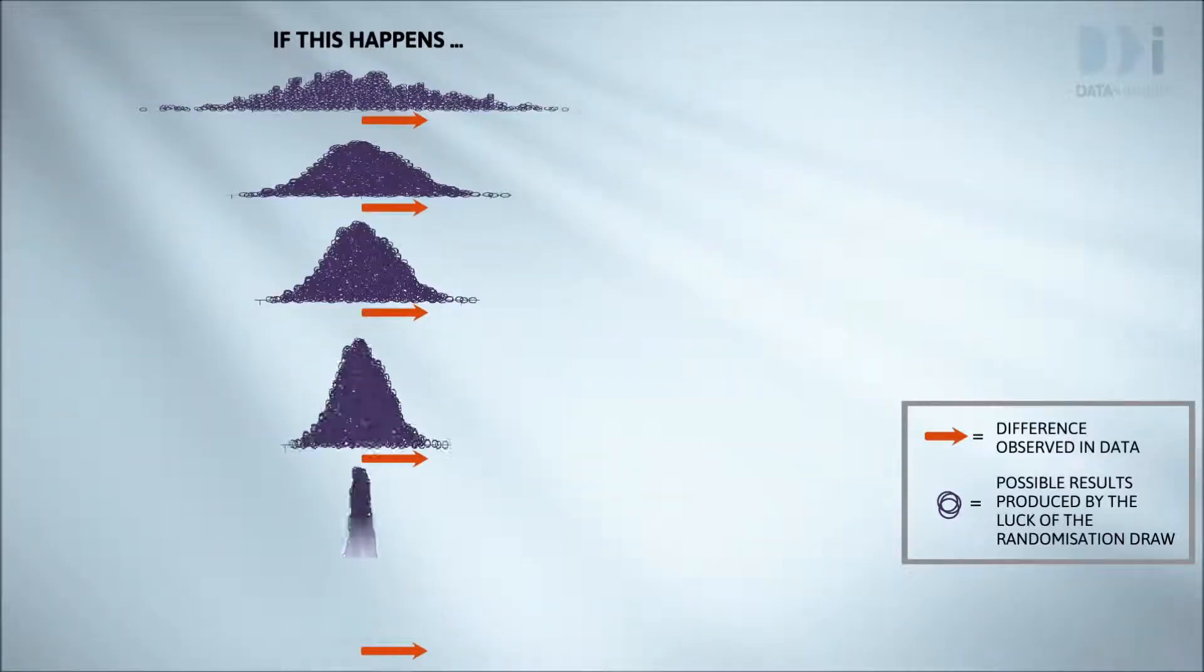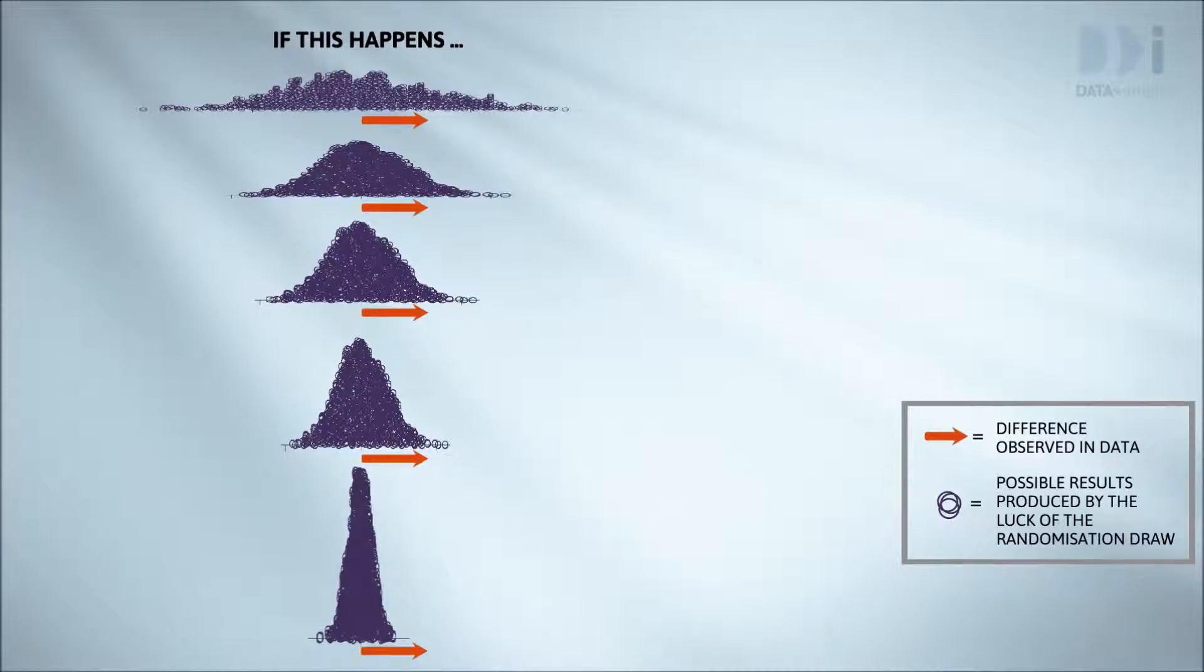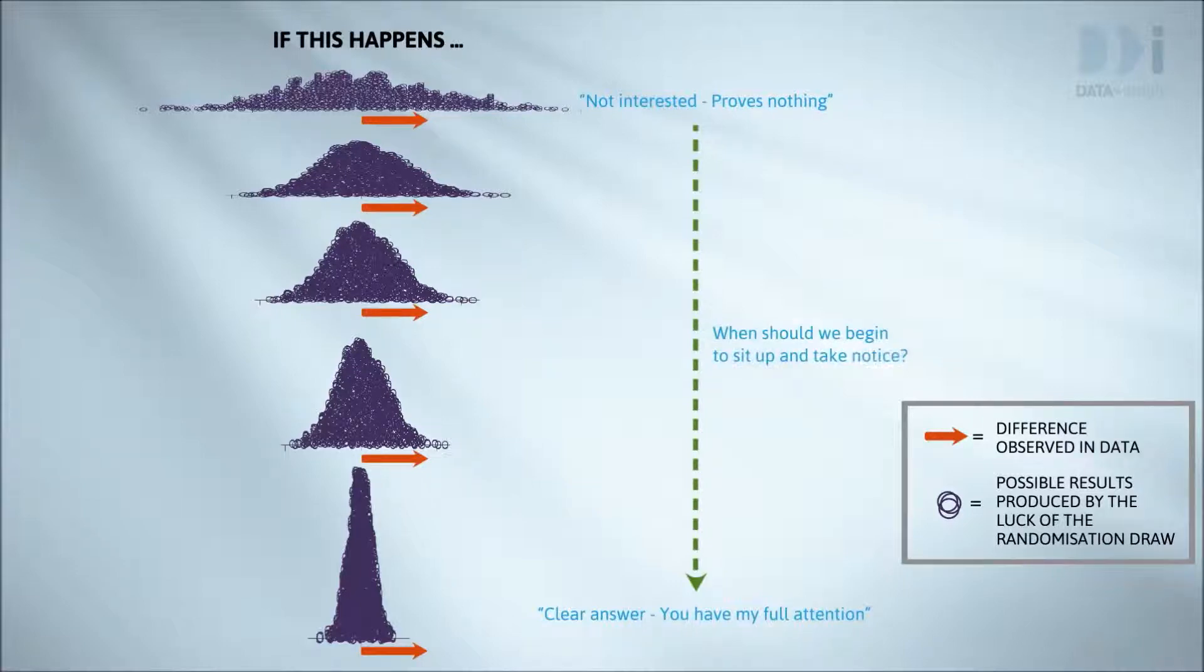Let's go back to this. Remember that the length of the red arrows is the difference we observed in our data. Possible degrees of randomisation variation are shown, decreasing as we go down. The question is, when do we sit up and take notice? We want to reach for some sort of operating rule here, based on the tail proportion.